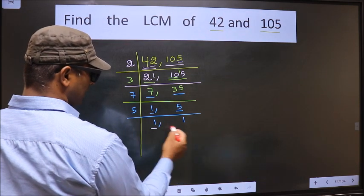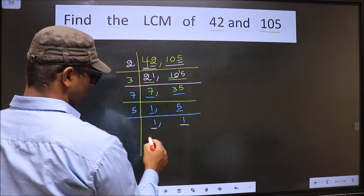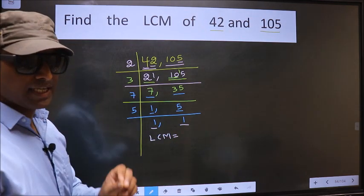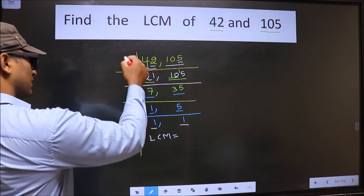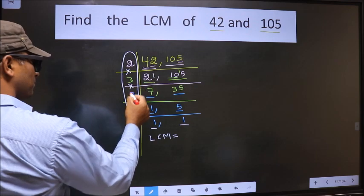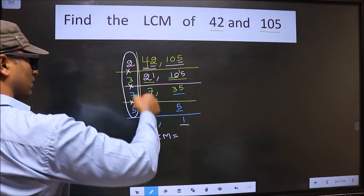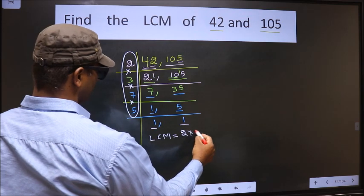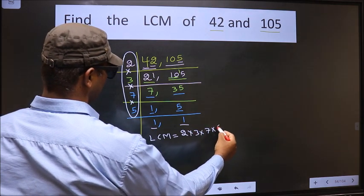We got 1 in both the places. So our LCM is the product of these numbers.